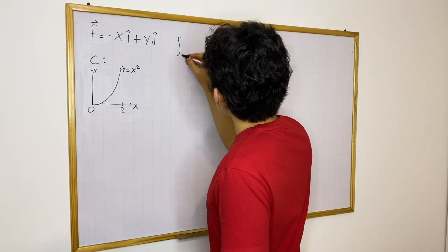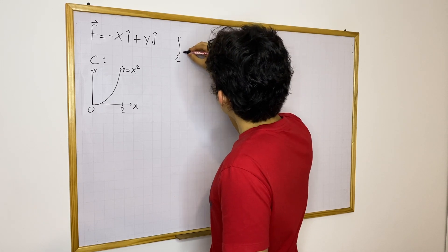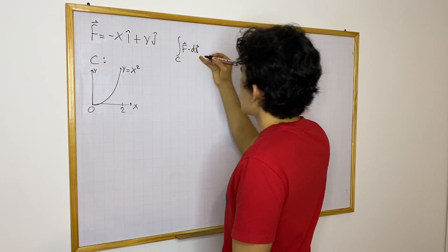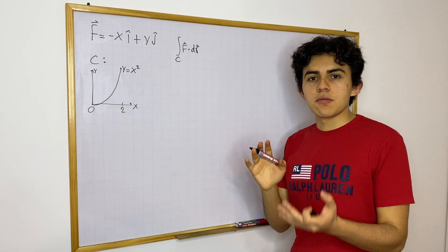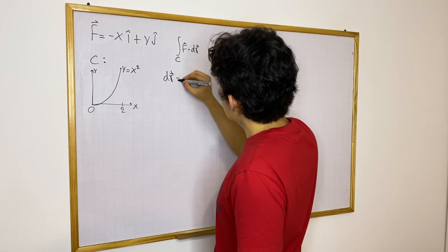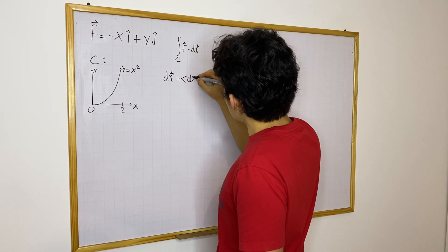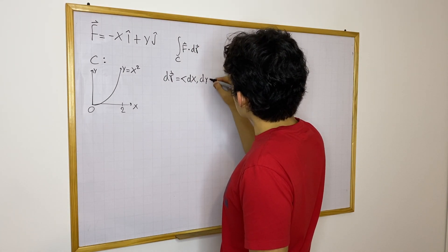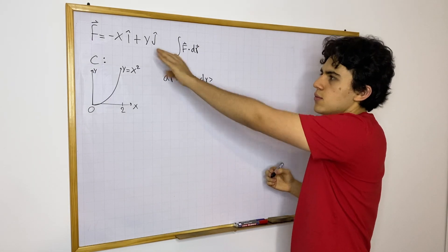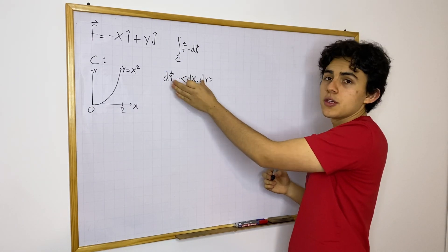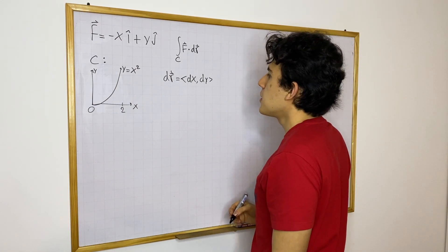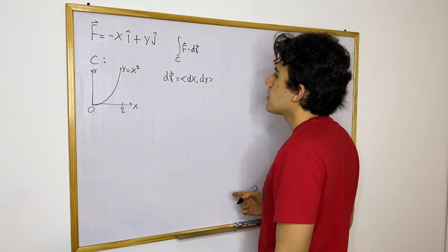So we're going to have the line integral on the curve C of f dot dr. dr remember is just going to be a displacement vector, one way in which dr is defined is like this, dx dy. This is really useful, and in fact I'm going to use this to solve this problem in a moment, but this is something you should know, it is very useful.